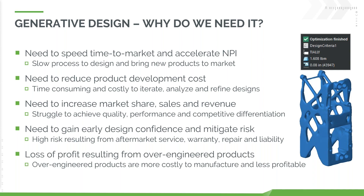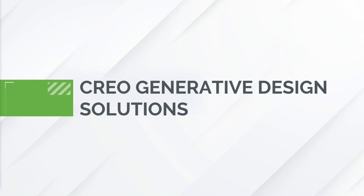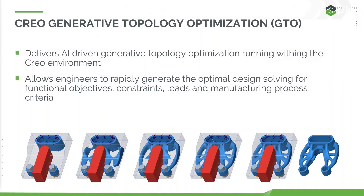A big issue is often over-engineered parts, which makes them less profitable, so we want to maximize the benefits out of each product. Generative design is really about letting the computer help us generate the optimal design. Creo has two generative design solutions, which we're going to talk about, as shown in the agenda slide. The first is Creo Generative Topology Optimization, or GTO.